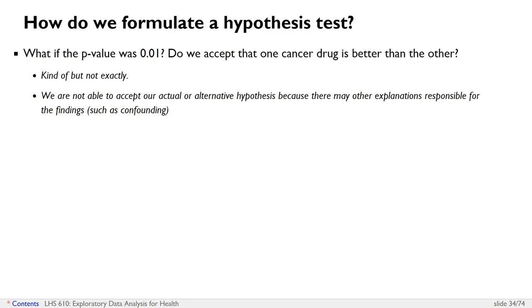So remember, we originally set out an actual or alternative hypothesis is kind of what we wanted to do. We then reformulated what the null hypothesis would need to be. And if the p-value is 0.01, we're able to reject our null hypothesis. And if our null hypothesis is that the two cancer drugs are the same, we can say that that is highly unlikely given our data, because there's only a 1% chance that the two cancer drugs are the same based on our data.